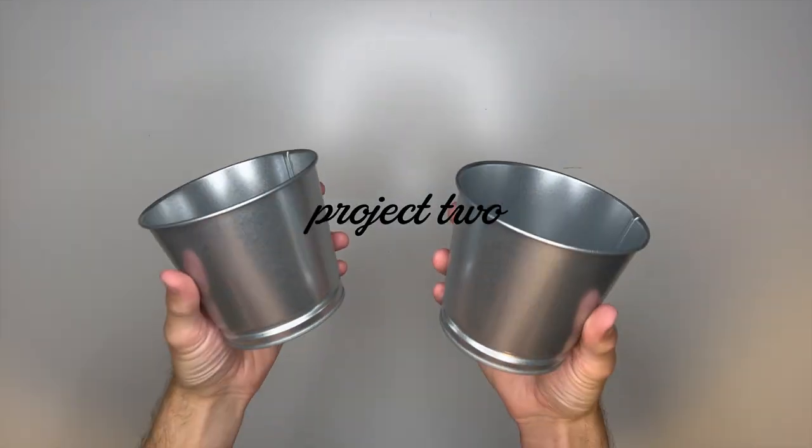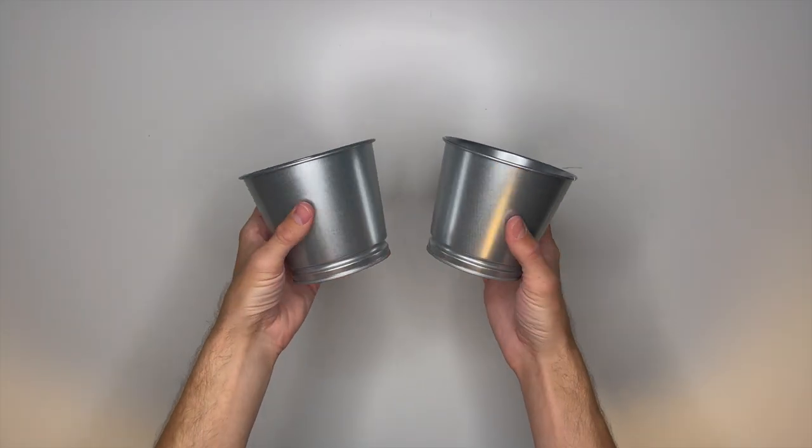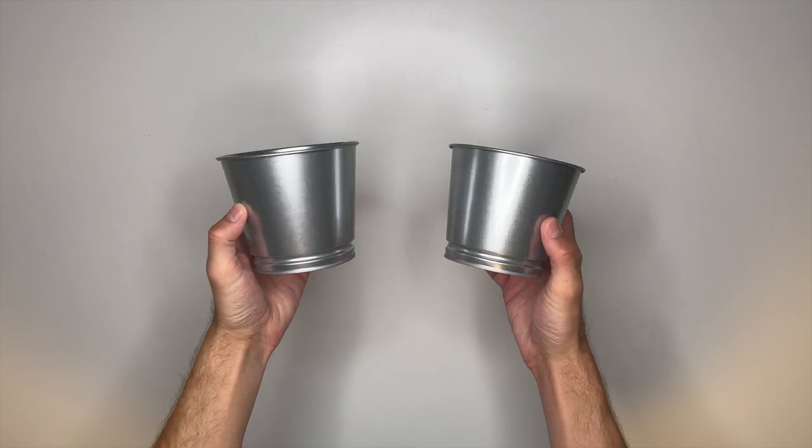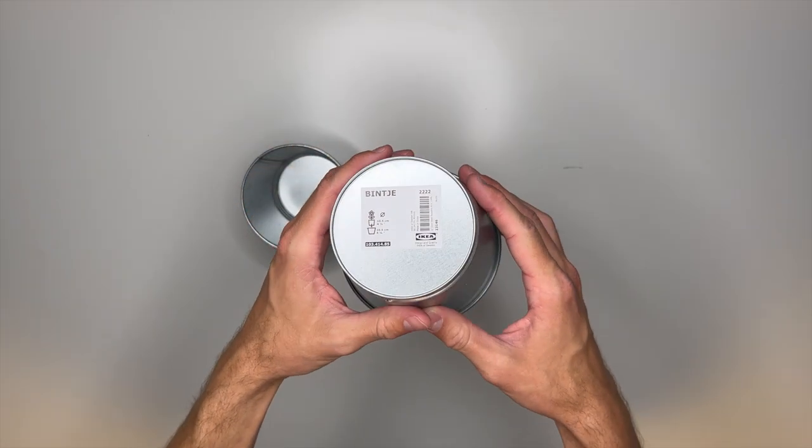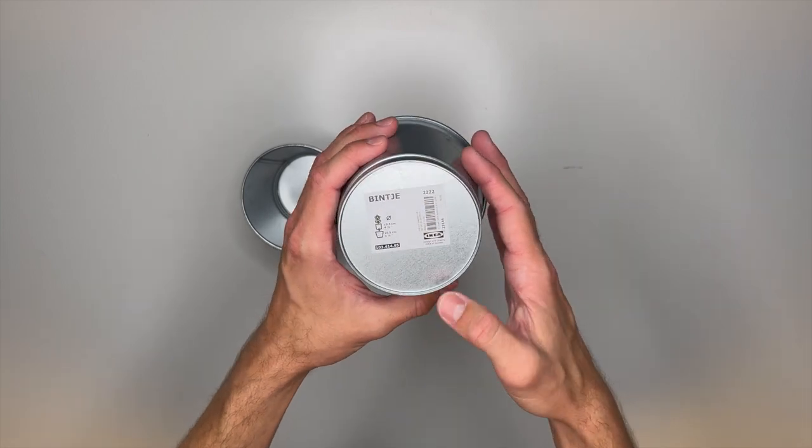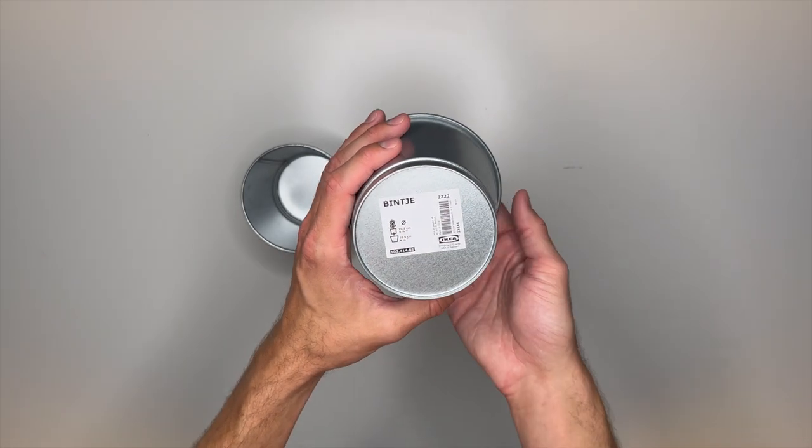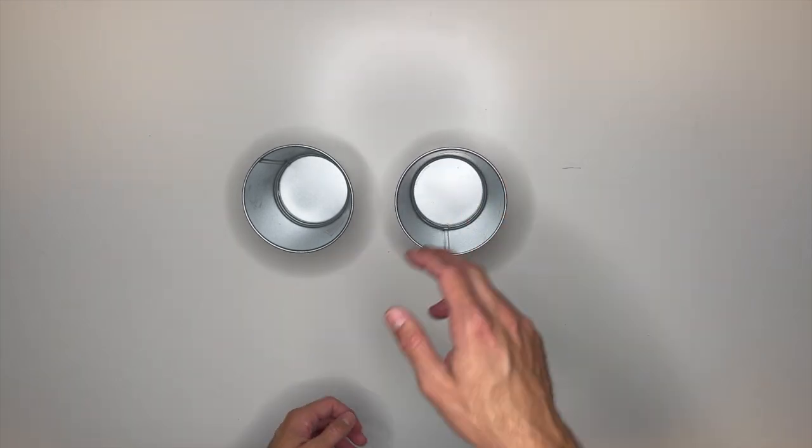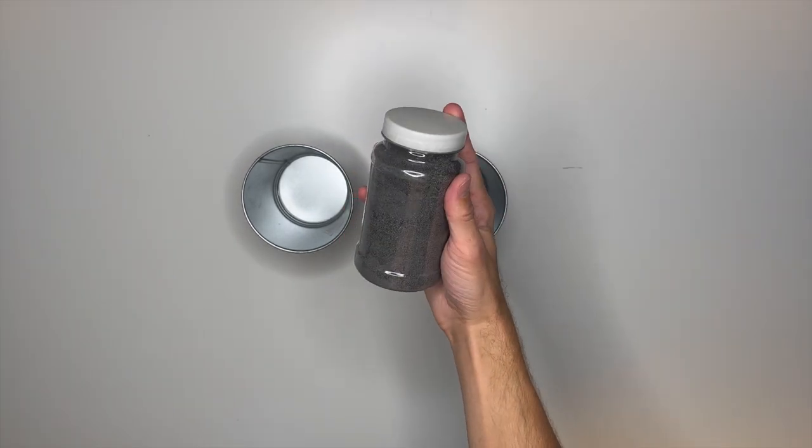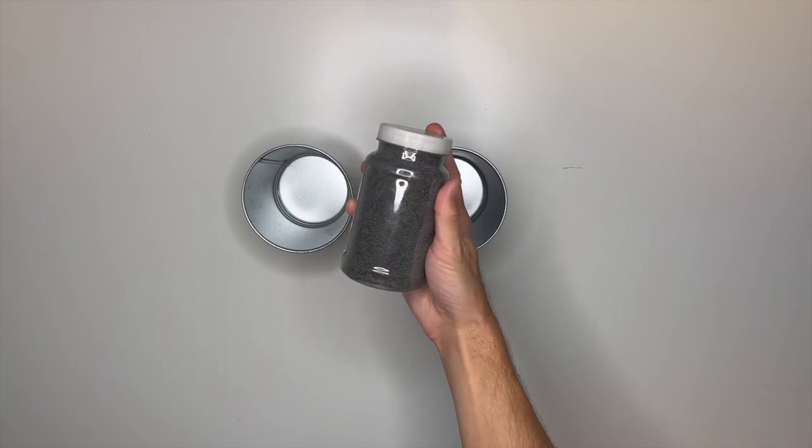For our second project, we're going to be taking these two very inexpensive planter pots. These are the Bentg planter pots and these were actually only 79 cents each. They're super simple and cute, but we're going to be turning them into a stylish little planter. I have some crafter sand I'm also going to be using for this project. You could use sand, rocks, any type of filler you would like.